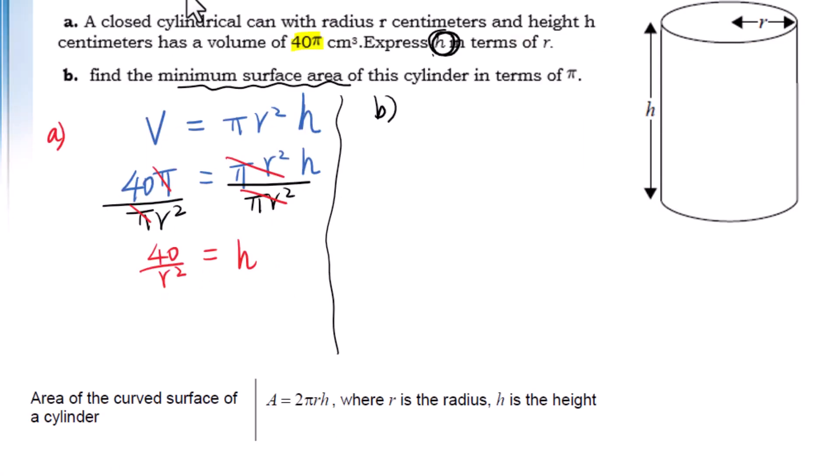In the formula chart, we find the area of the curved surface of a cylinder is 2πrh. The total surface area, we need to add the top and bottom surface area, πr².